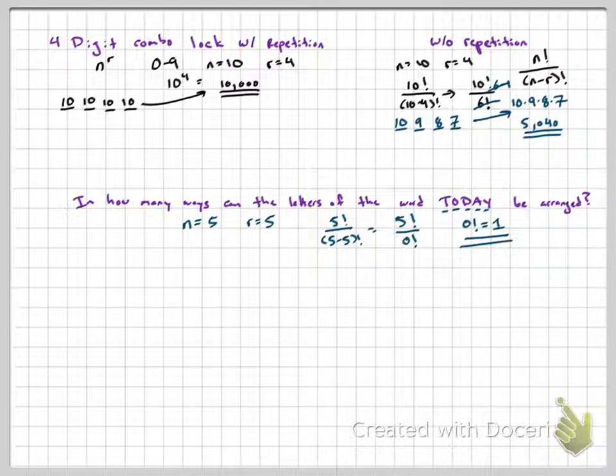So this ends up being just a 5 factorial problem. 5 times 4 times 3 times 2 times 1. That gives us 120.